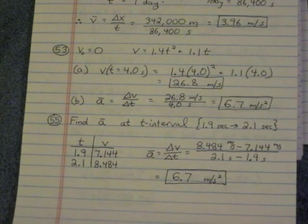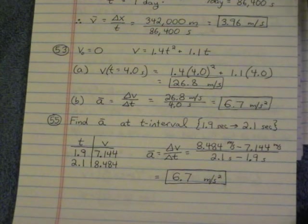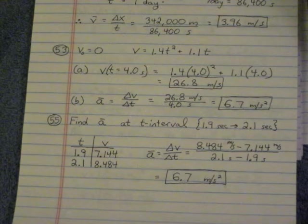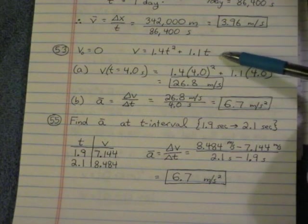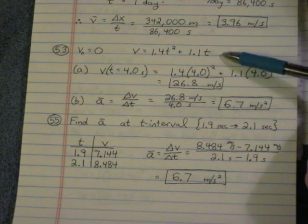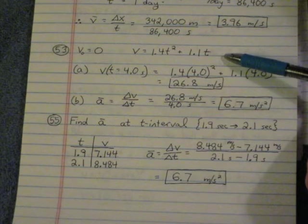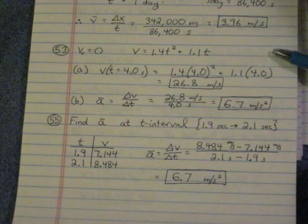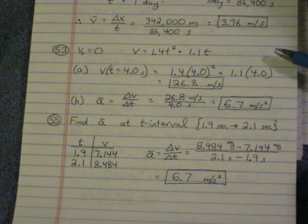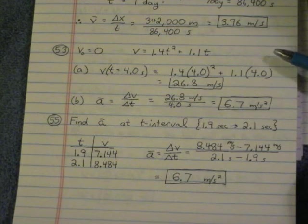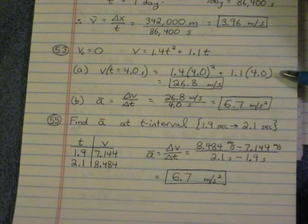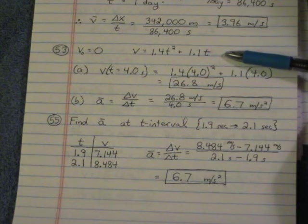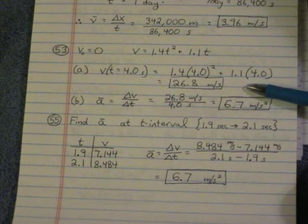Number 53. 53 and 55 go together. So if you look at the directions above 53, it says that velocity is given as a function of 1.4t squared plus 1.1t. And for 53, it says find the car's velocity at the end of the 4-second interval. Find the average acceleration for this interval. Okay, so velocity at the end of 4 seconds is just plugging in 4 into the formula for velocity. Let t equals 4. And you get 26.8 meters per second.